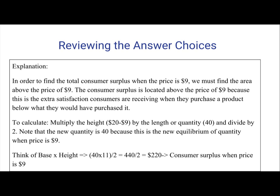To calculate this, you multiply the height — $20 minus $9 — by the quantity, which is 40, and divide by 2. Note that the quantity is 40 because this is the equilibrium quantity when the price is $9. Base times height: 40 times 11, divided by 2. So $440 divided by 2 is $220, which is the consumer surplus when the price is $9.